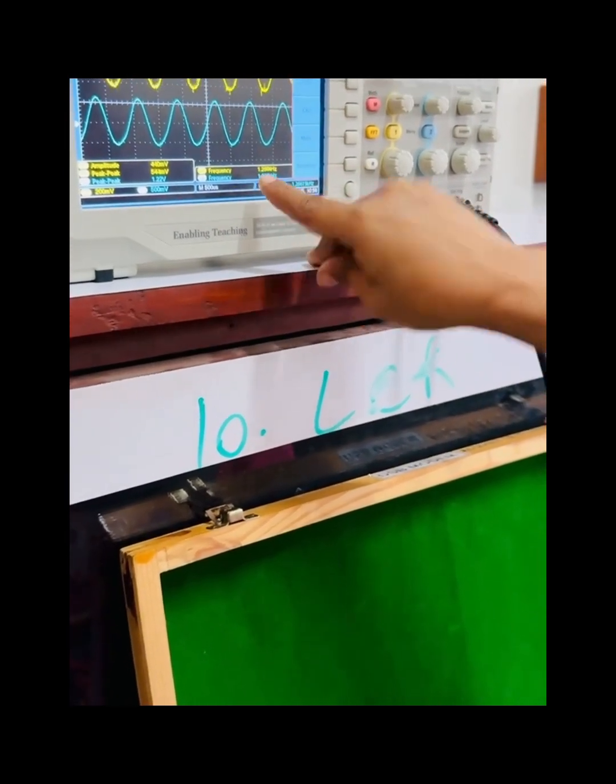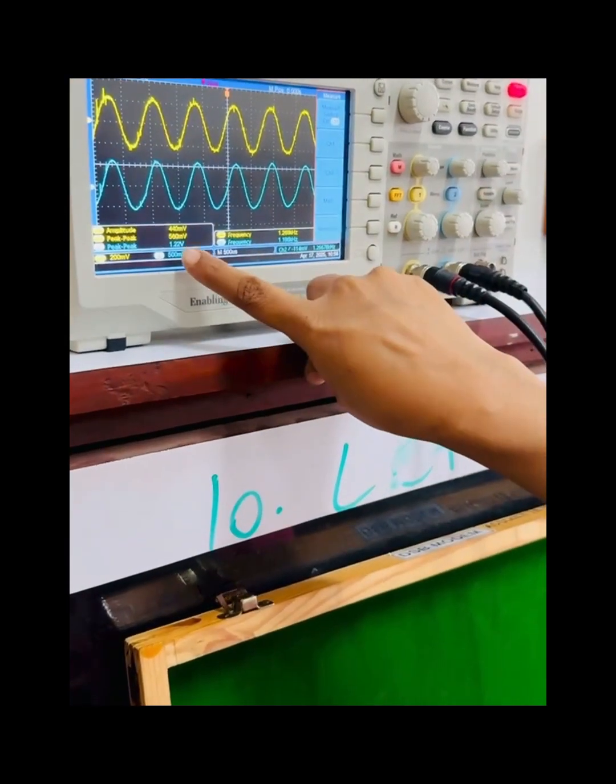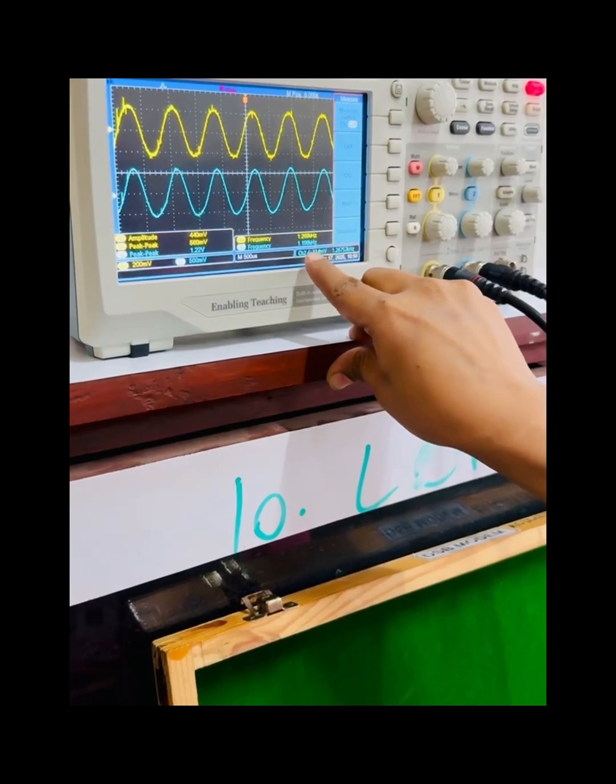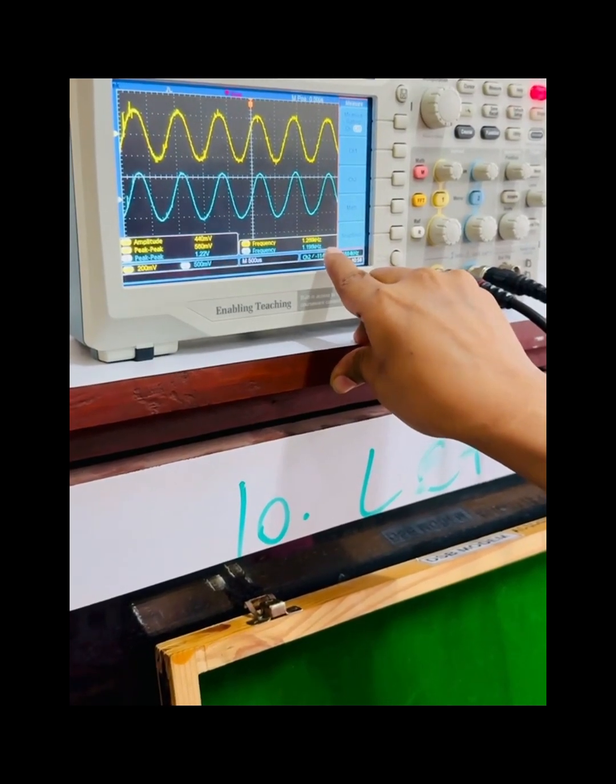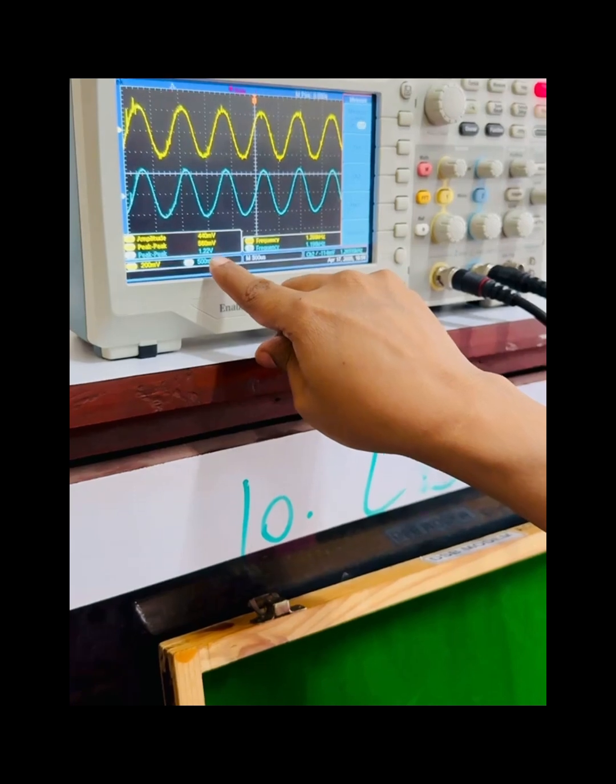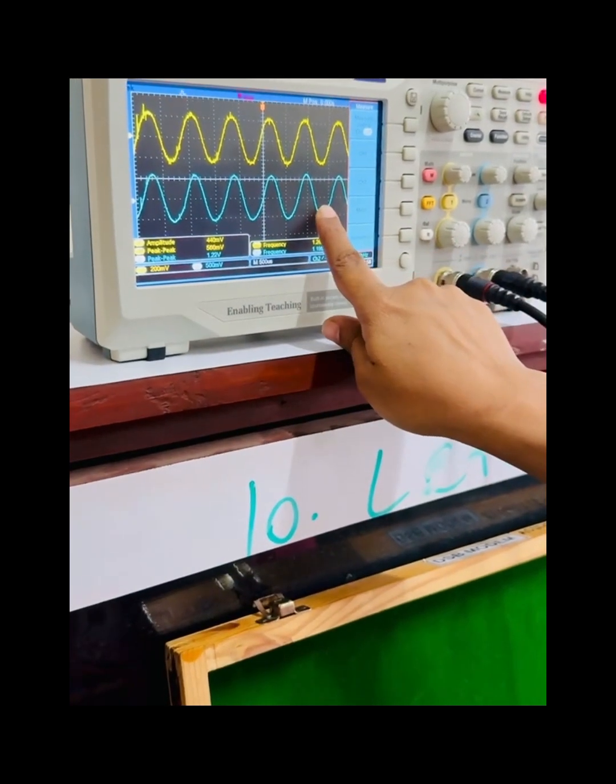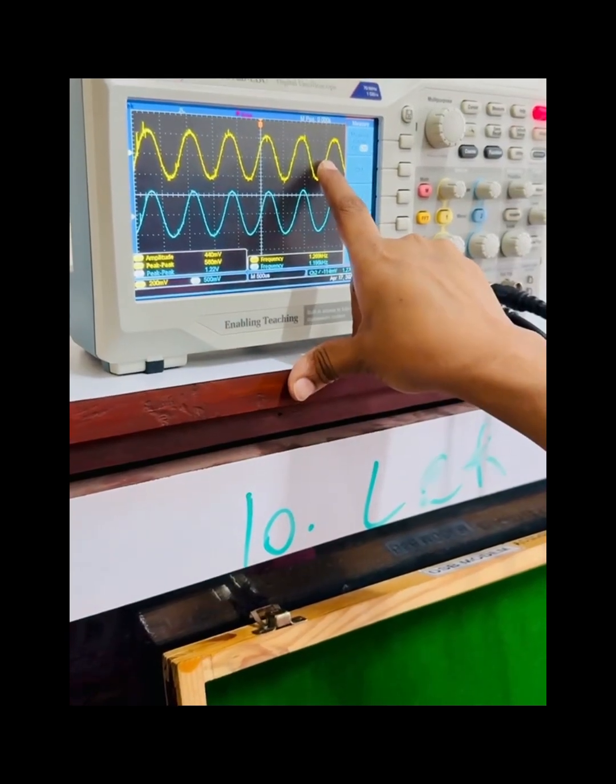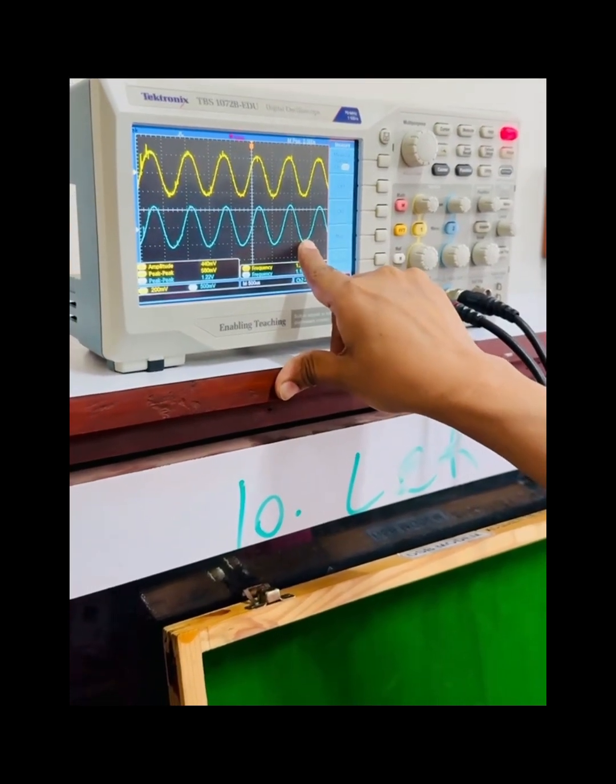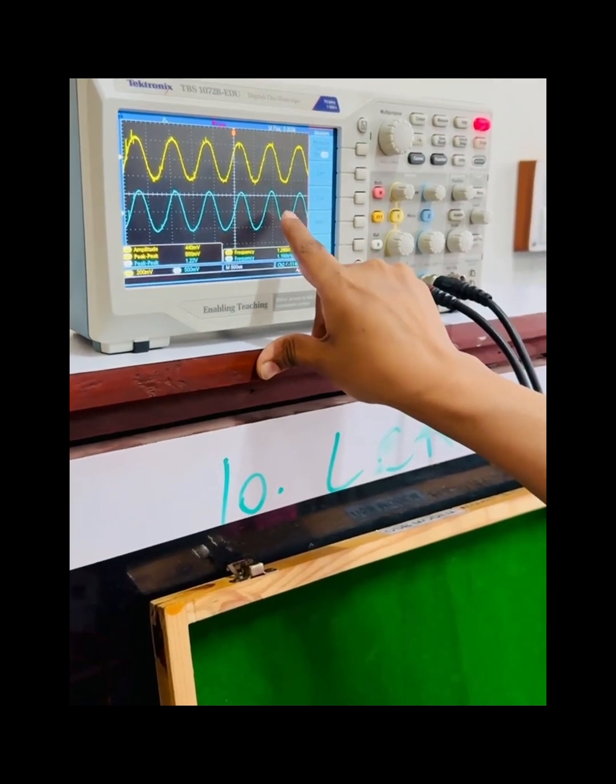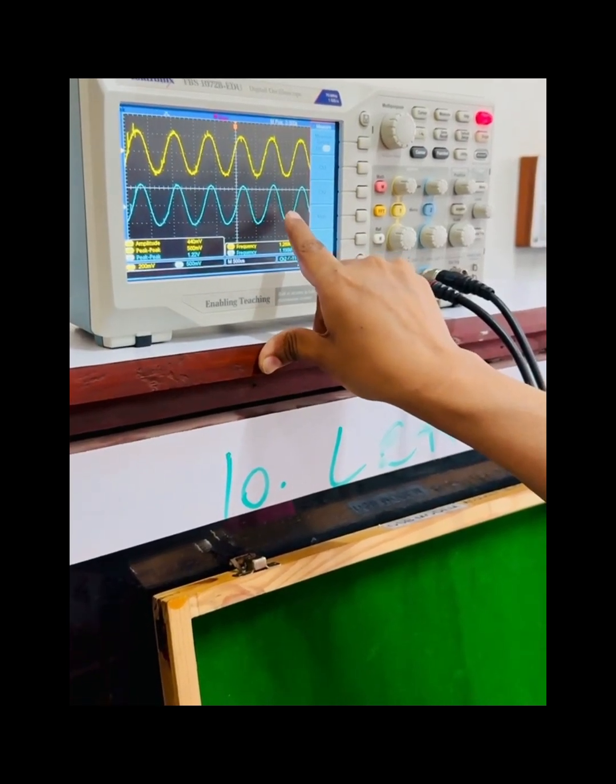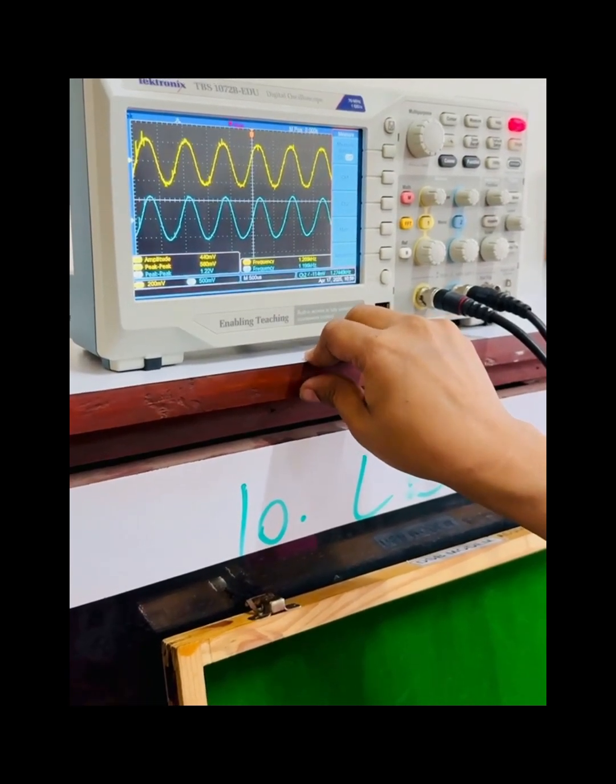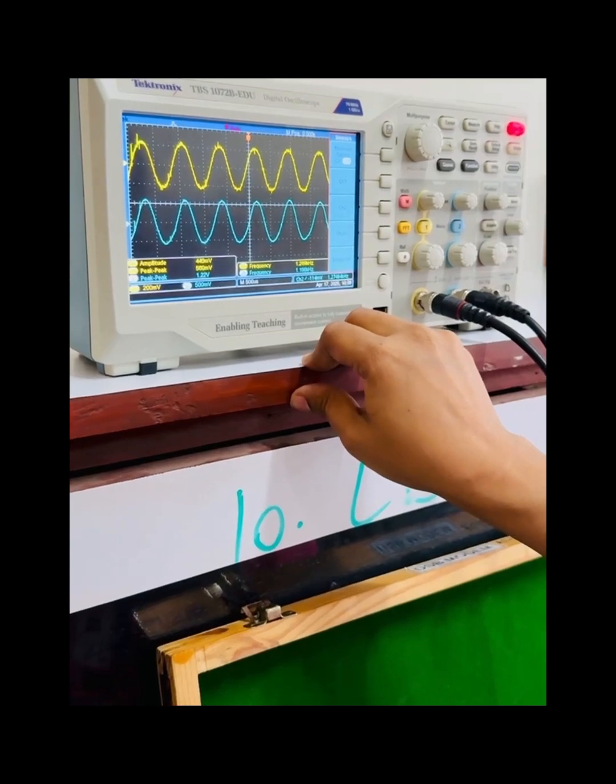We can observe that the frequency of modulating signal and demodulated signal are approximately the same, that is 1.2 kilohertz, and the amplitudes are 1.22 volts for the demodulated signal and 560 millivolts for the modulating signal. The amplitude of the demodulated signal has increased because we have passed it through the low pass filter, and low pass filter increases the gain of low frequency signals while filtering out the high frequency signals.